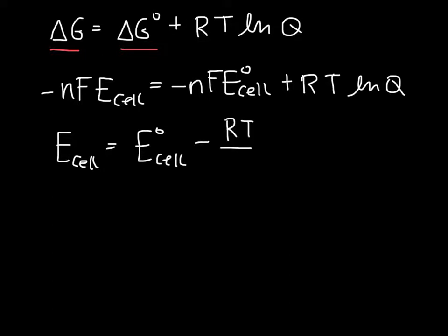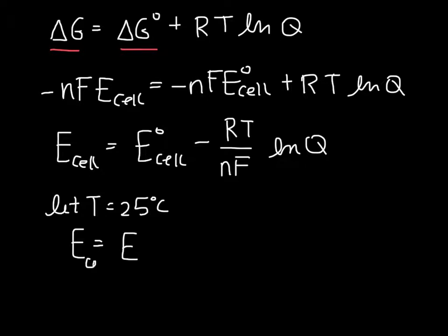If we let T equal 25°C, then we have the following simplification, where the cell potential is the standard cell potential minus 0.0592 volts divided by n times log Q.